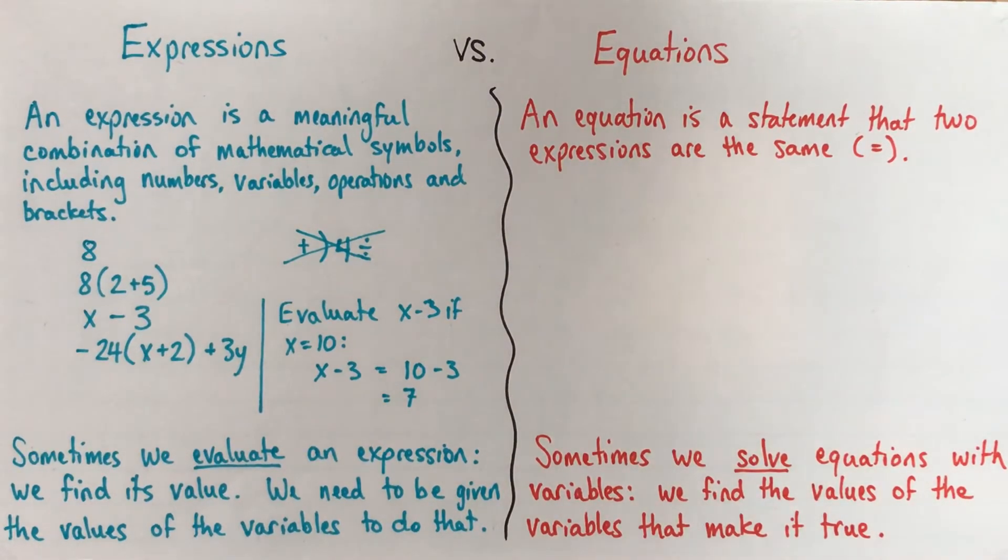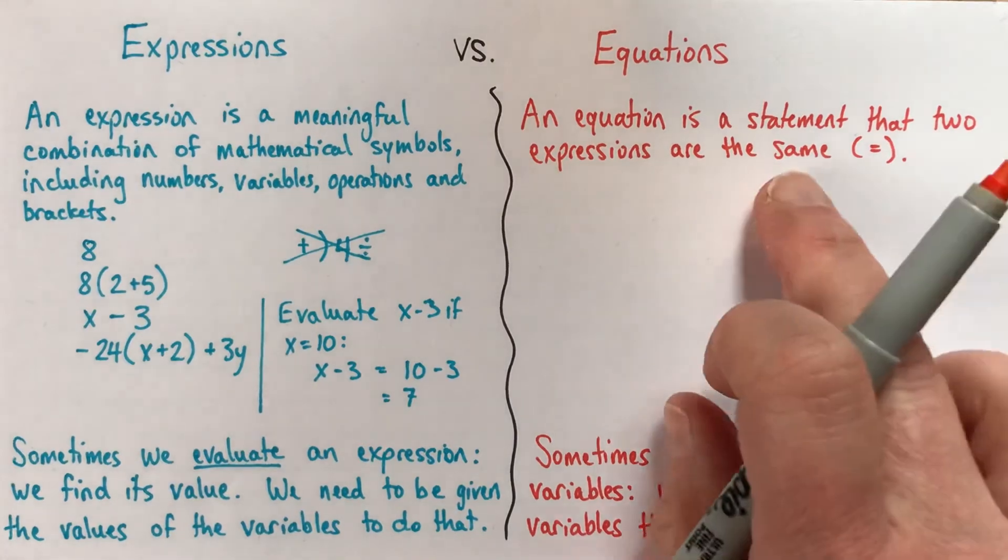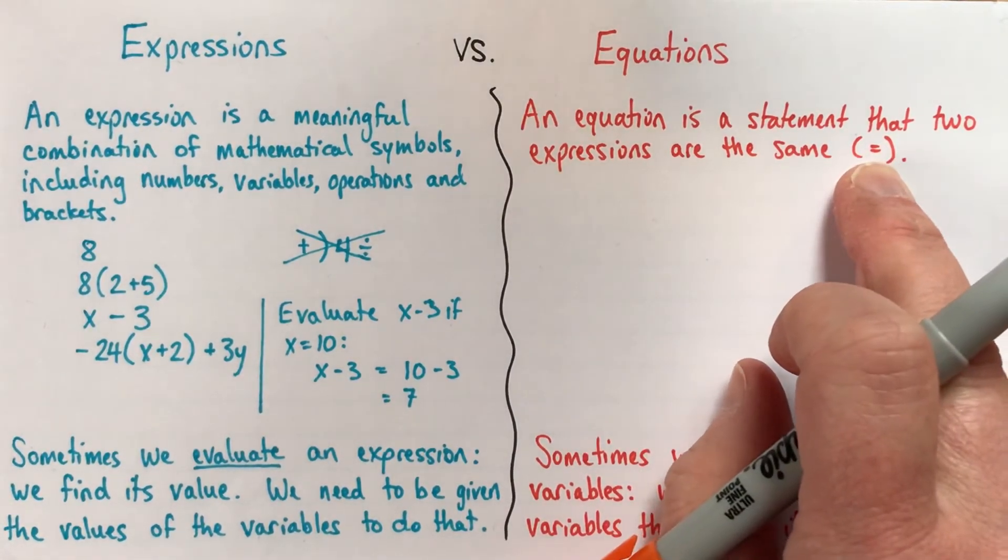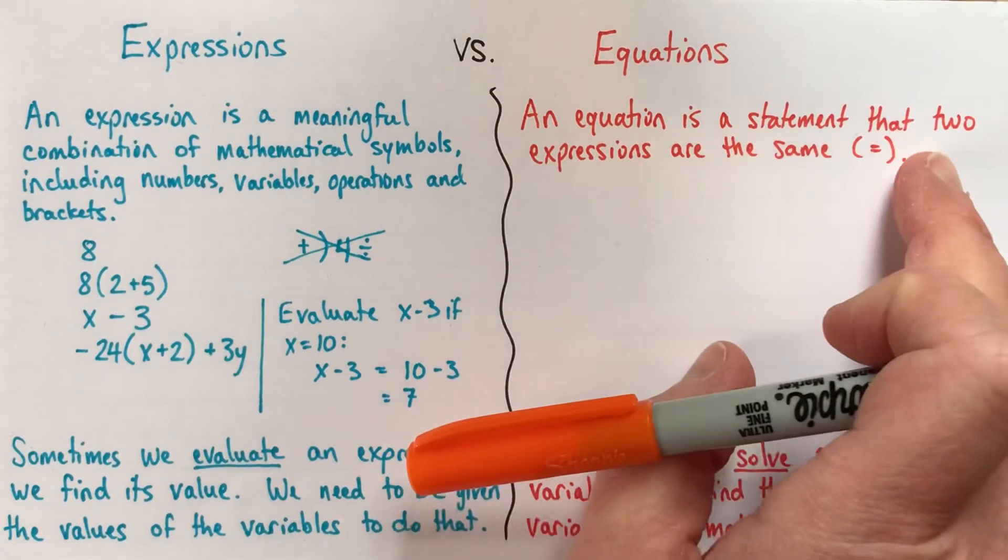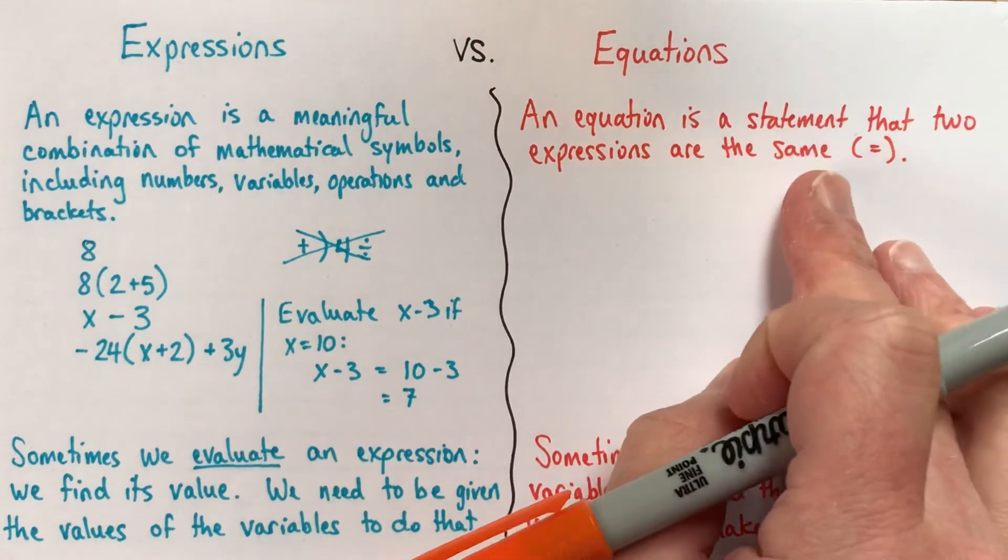Let's take a look at equations. An equation is actually a statement, but we don't usually use words. An equation is a statement that two expressions are the same, right? And usually to indicate that they're the same, we just use the equal sign. Another way of saying this is an equation is a statement that two expressions are equal.